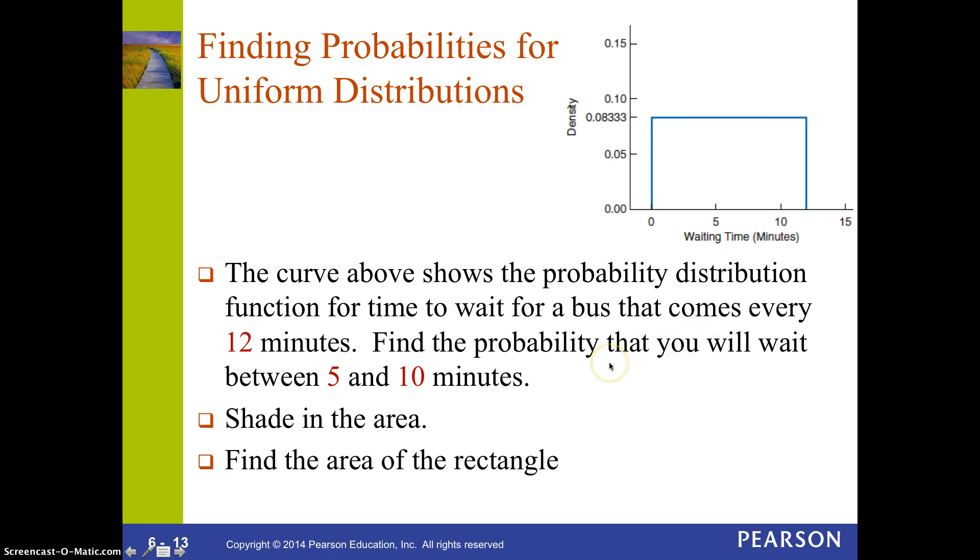So, we want to find the probability that you have to wait between 5 and 10 minutes. So, the first thing we want to do is actually shade in that area that we're looking at. So, that's the red rectangle that I have. Now, we just got to find the area of this rectangle. Remember, the area of a rectangle is its length times its height, or base times height. It has a length of 5. So, we're going to take that 5 times its height, which is .08333. So, the probability that we have to wait between 5 and 10 minutes is the 5, that's its width times the .0833, that's its height. So, about 41.65% of the time, we'd have to wait between 5 and 10 minutes for the bus to show up.